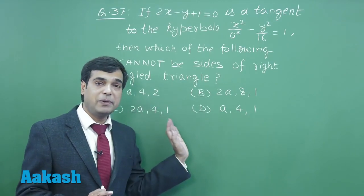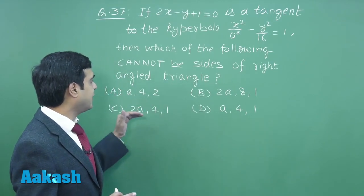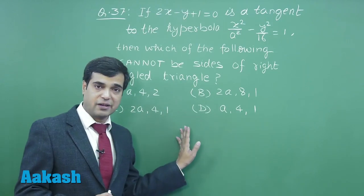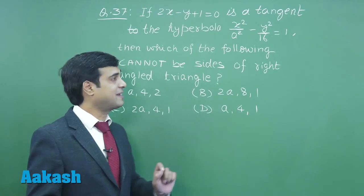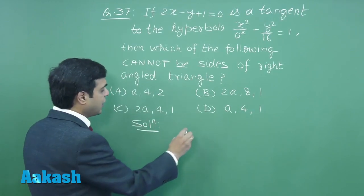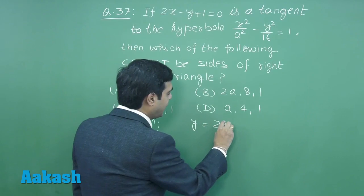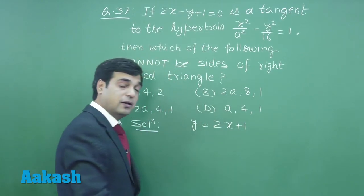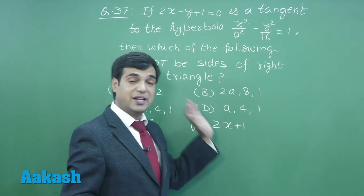Four options are given. A simple question from conic section. Let's start solving it. The tangent equation given here is y = 2x + 1.